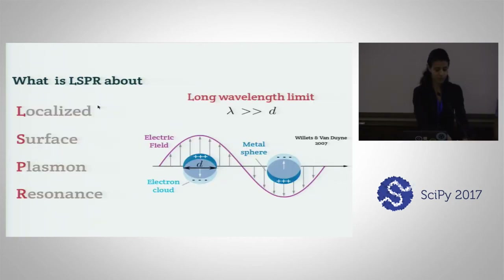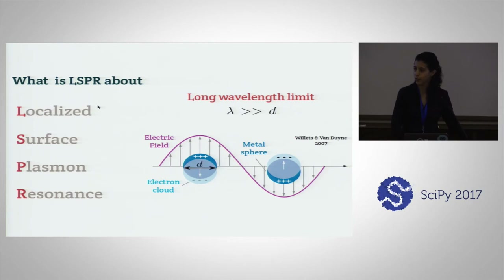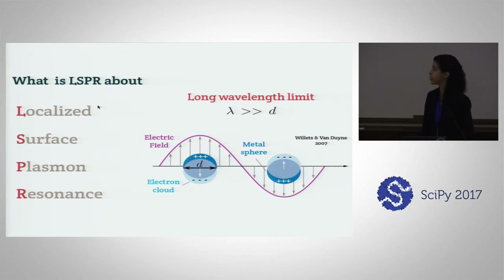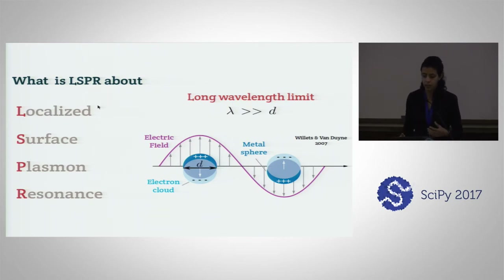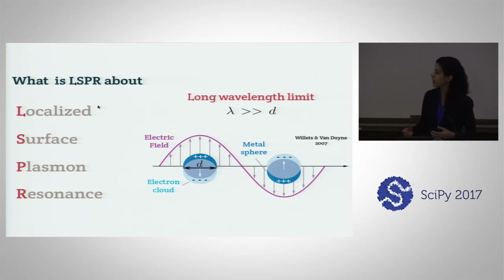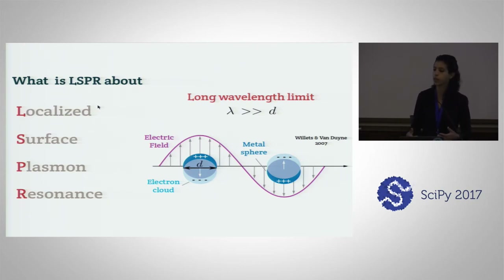Thank you, Gil. We're going to do a bit of a turn and talk about our most recent implementation. The part of the title said LSPR, and he hasn't talked about it, so you might be wondering. LSPR stands for localized surface plasmon resonance — an optical phenomenon consisting of light shining on a conductive nanoparticle smaller than the wavelength of the incoming field. The electrons on the surface of the nanoparticle are excited by the incoming electric field, oscillate with it, and generate plasmons.